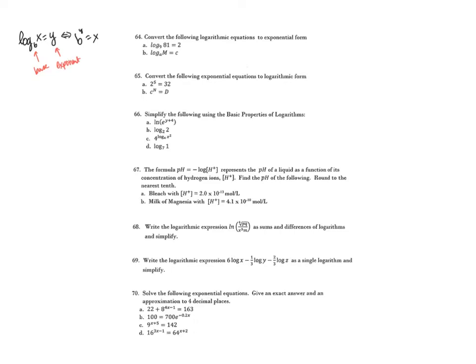So if we want to convert these to exponential form, for part A my base is 9, so 9 to the power 2 is equal to 81. And then for part B, the base is A, so A to the C equals M.